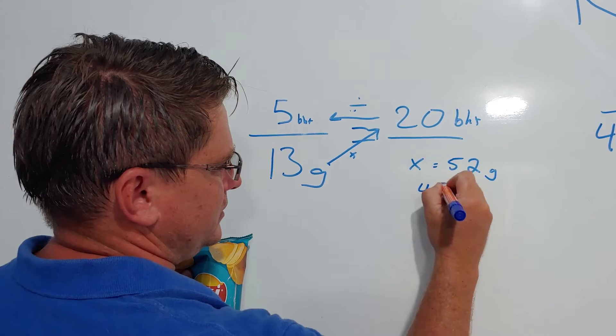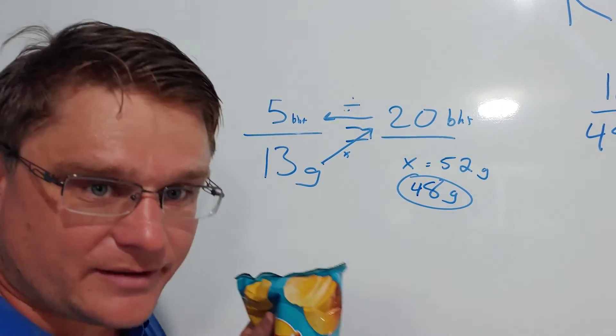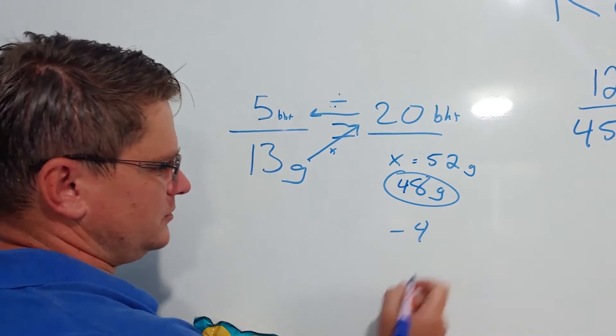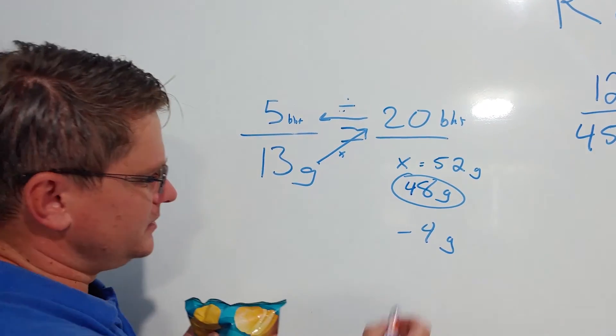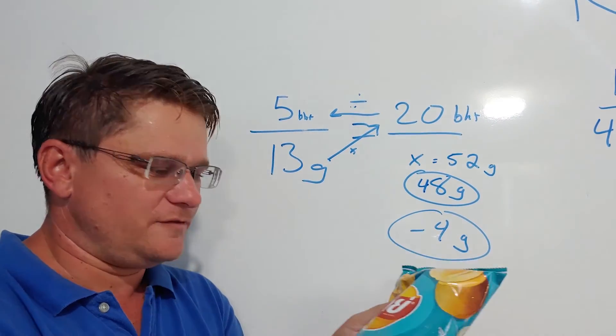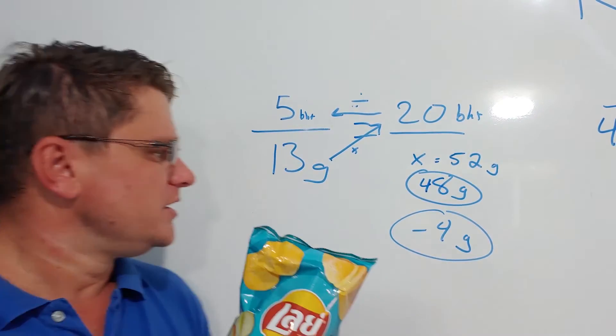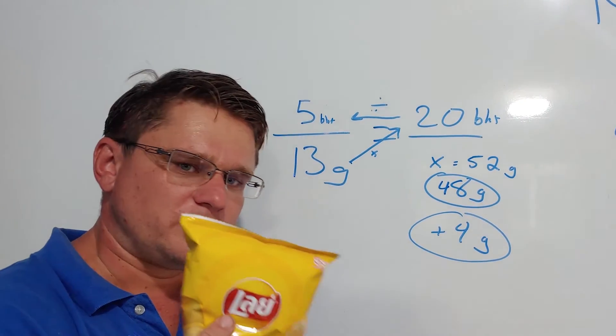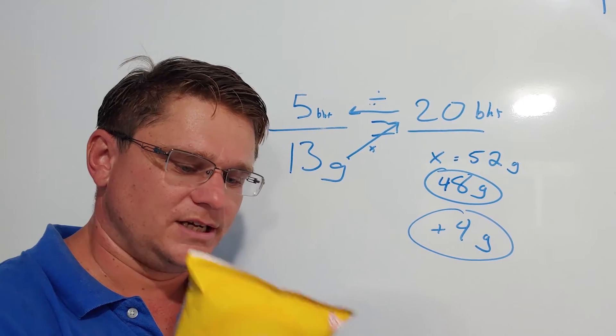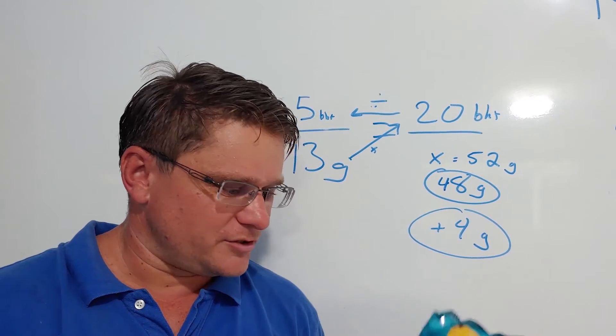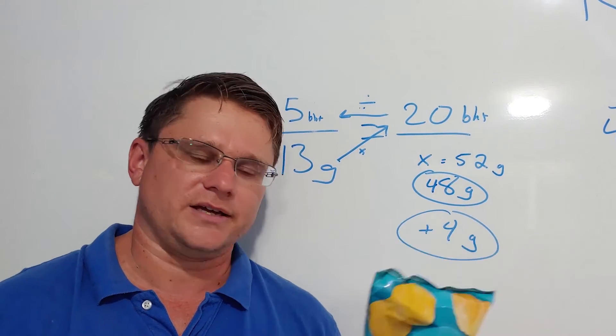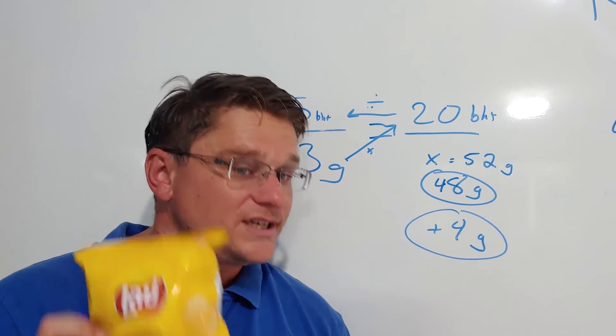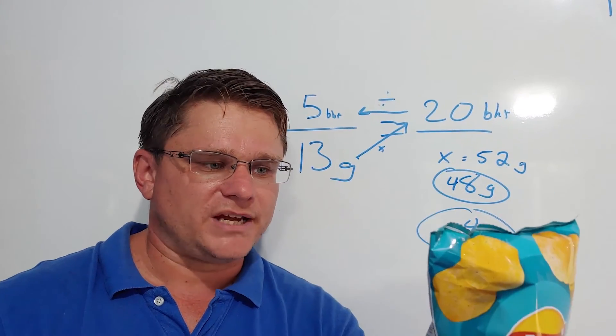But the real number is 48 grams. So you're essentially losing 4 grams by buying the bigger bag. If you would buy 4 small bags you are getting positive 4, 4 grams of Lay's. Now that's really weird. Normally you think you always get more when you buy the bigger bag. Well not in this case. If you buy 4 bags of the small ones you're getting more chips than if you buy 1 bag of this.